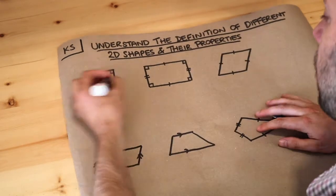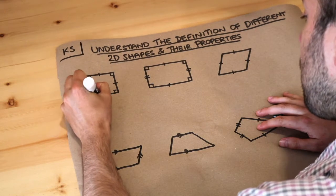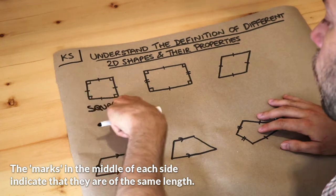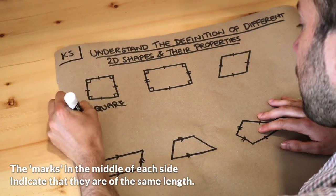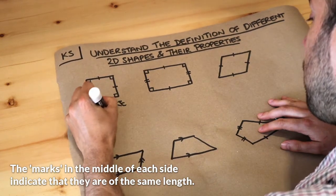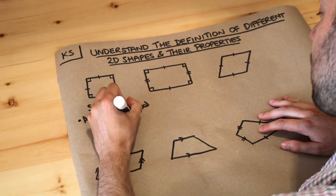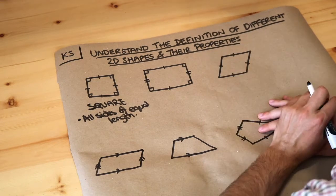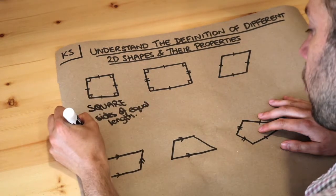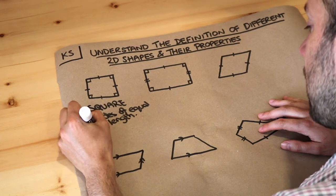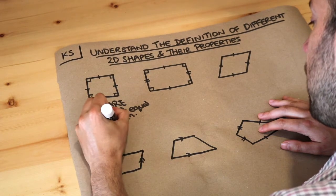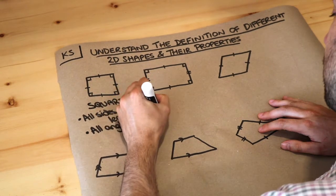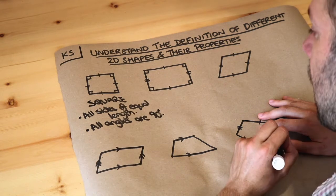This shape here you probably recognize as a square, but what are the properties of a square? Well firstly, all the sides are the same length — all sides are of equal length. But that's not enough, because this shape here is a quadrilateral where all the sides are the same length but it's clearly not a square. So we also need to say all its angles are right angles — 90 degrees.